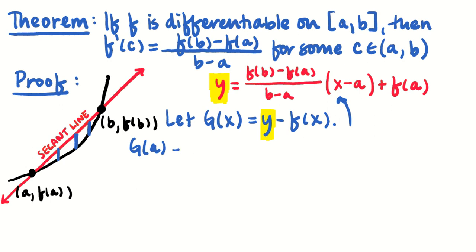g(a) is equal to y(a), y with a plugged in, minus f(a). But what happens when I plug a in for x into the equation for y(x), the secant line? That becomes zero. So the first term becomes zero. So then I have zero plus f(a) is f(a). And then over here, I'm going to subtract f(a) and that will be zero.